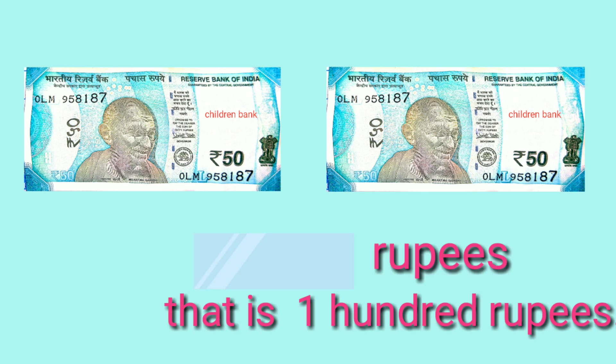Look, see another example: 2 notes of 50 rupees each make 100 rupees. That is 100 rupees — 50 rupiah cha dun nota manje 100 rupiah, manje 1 shatak rupiah.